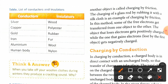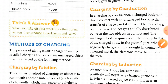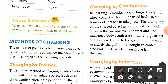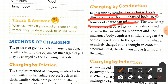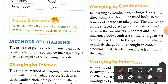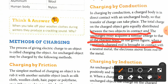The second method is charging by conduction. In charging by conduction, a charged body is brought into direct contact with an uncharged body so that transfer of charge can take place. The total charge on the charged body gets equally distributed between the two objects in contact, and the uncharged body acquires a similar charge to that of the charged body. For example, when a negatively charged rod is brought in contact with a neutral metal, electrons move from the rod to the metal.